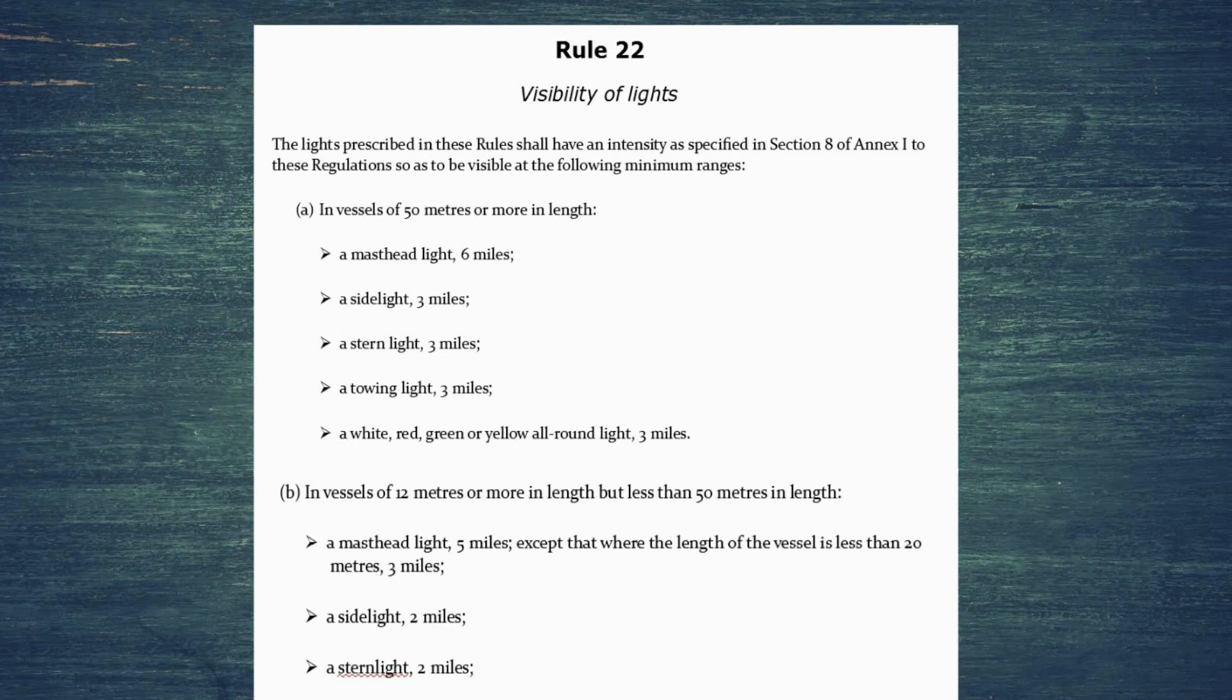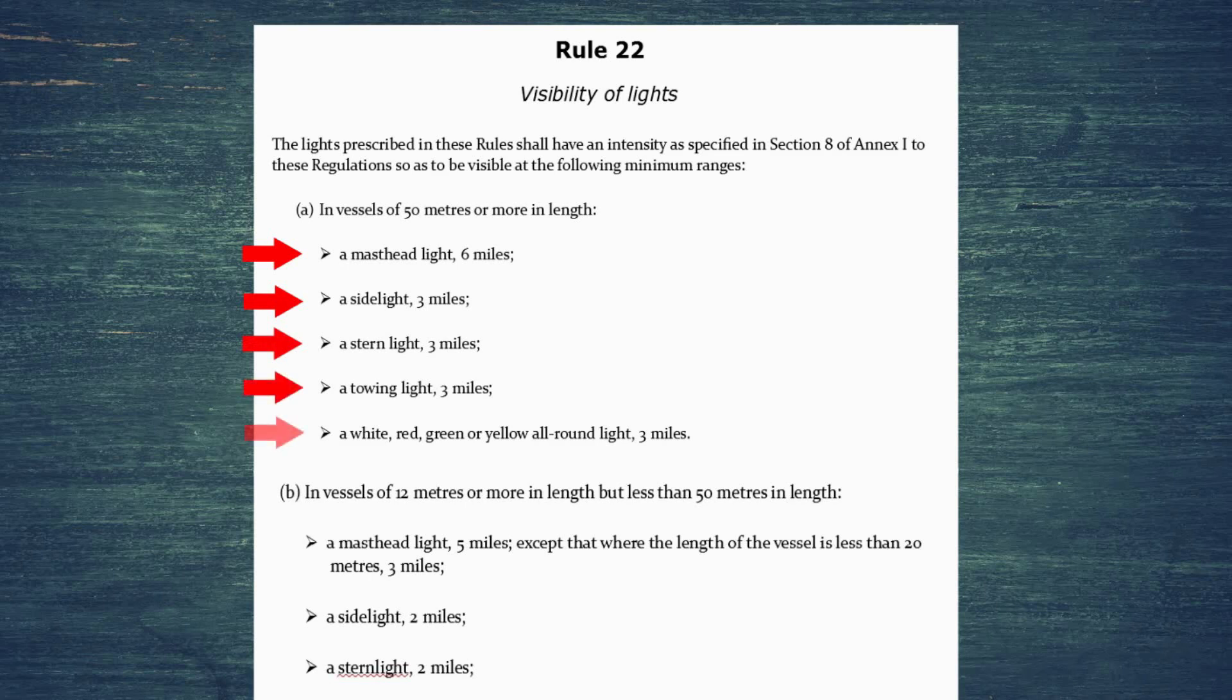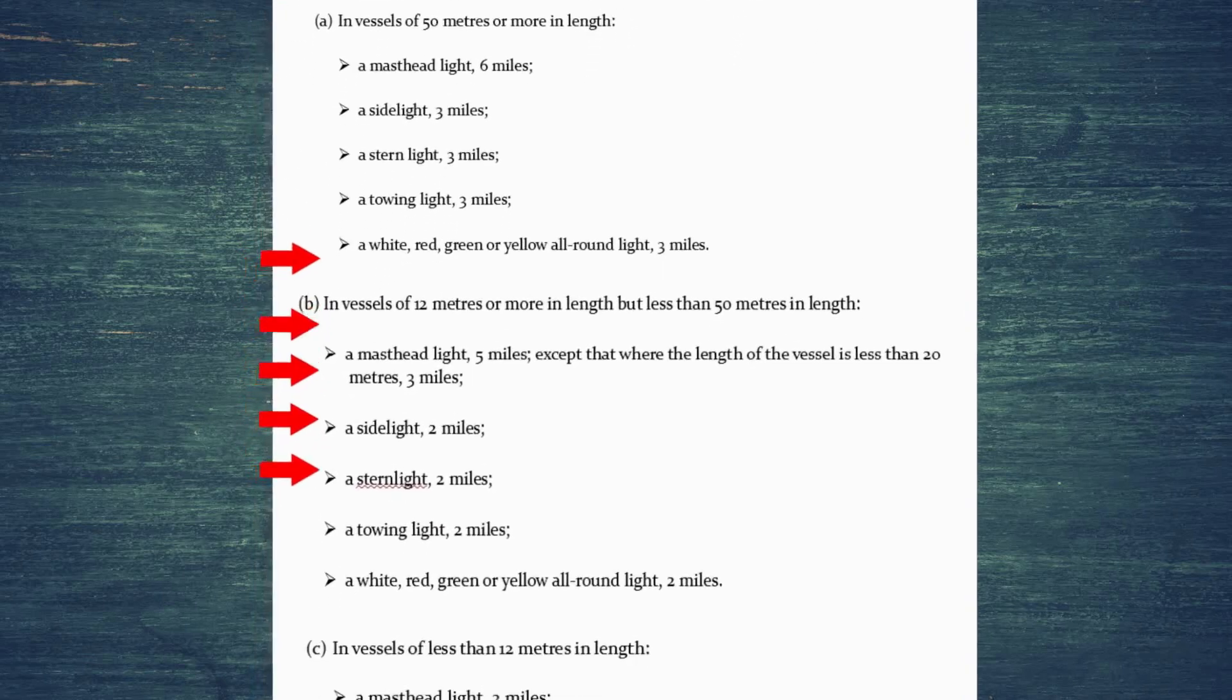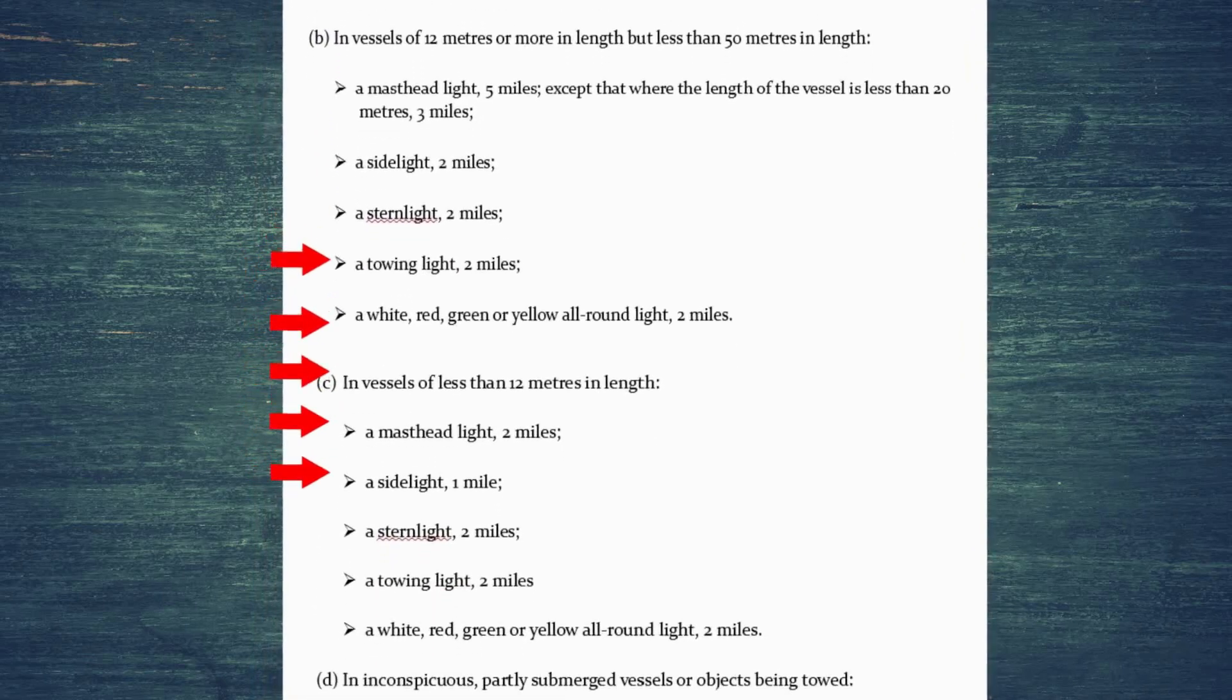Now we're not going to go through every one of these in detail. You can see each section covers the masthead light, the sidelight, the stern light, the towing light, and a white, red, green or yellow all-round light. These same lights will appear in all the paragraphs of the rule.